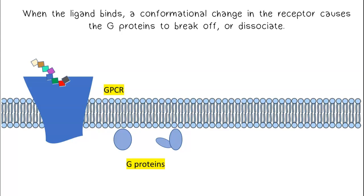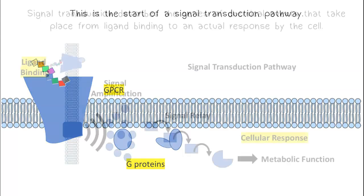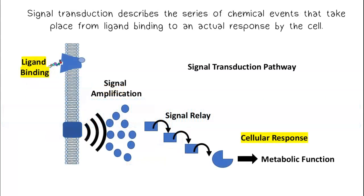When a ligand binds, a conformational change in the receptor causes the G proteins to break off or dissociate. This is the start of a signal transduction pathway. Signal transduction describes the series of chemical events that take place from ligand binding to an actual response by the cell.